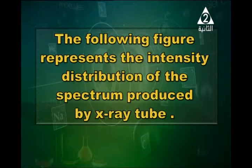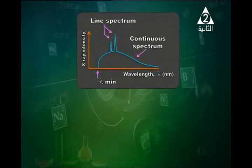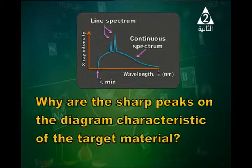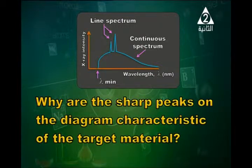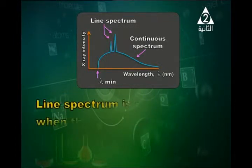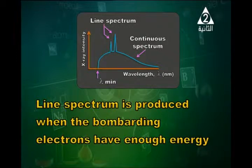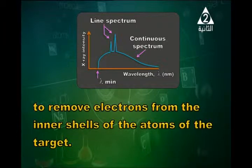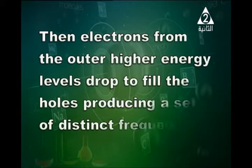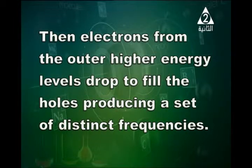The following figure represents the intensity distribution of the spectrum produced by an X-ray tube. Why are the sharp peaks on the diagram characteristic of the target? The sharp peaks represent the line spectrum. Line spectrum is produced when the bombarding electrons have enough energy to remove electrons from the inner shells of the atoms of the target. Then electrons from outer higher energy levels drop to fill the holes, producing a set of distinct frequencies.